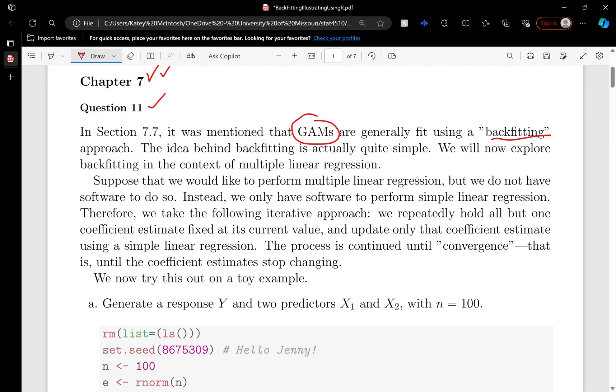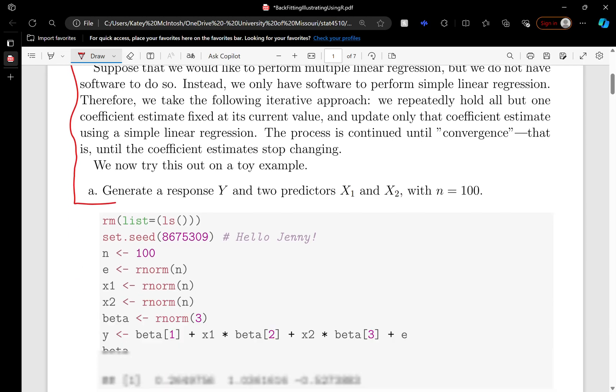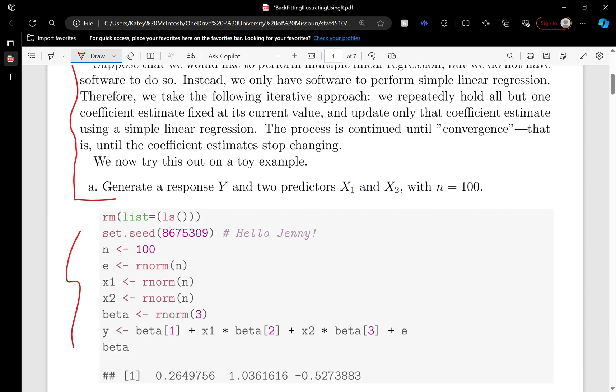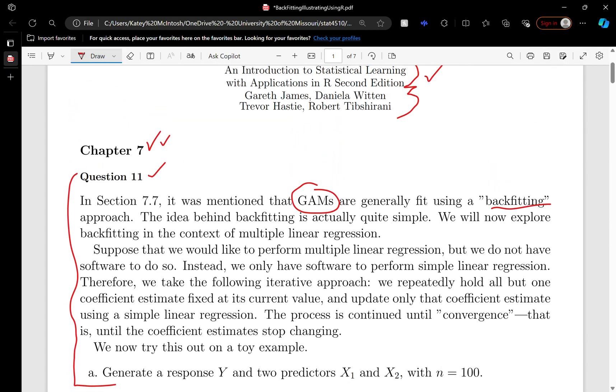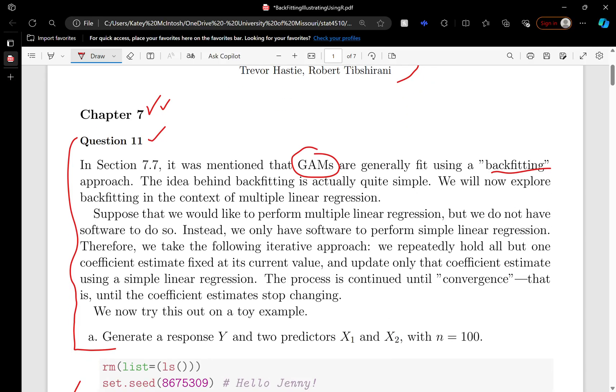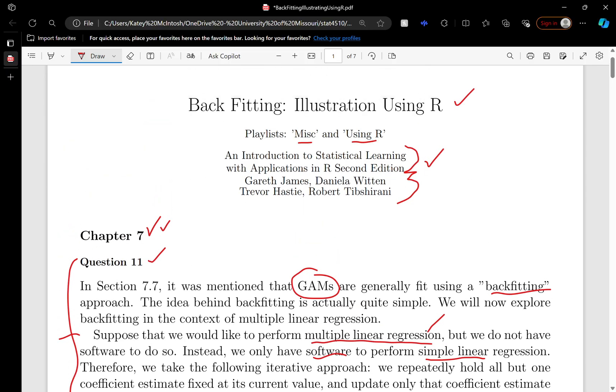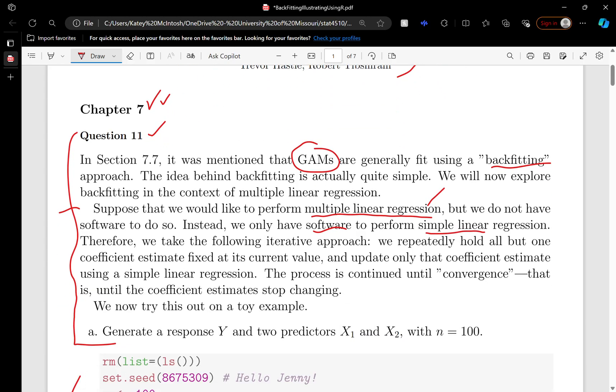One note here: anything that I type is 100% taken from the book, copied over. Now the R code is mine—it's my attempt at the solution for this homework problem. Here's the setting: suppose that we want to fit a multiple linear regression, but our software only does simple linear regression. Can we still estimate all the parameters in multiple linear regression? The answer is yes. That's what backfitting accomplishes.